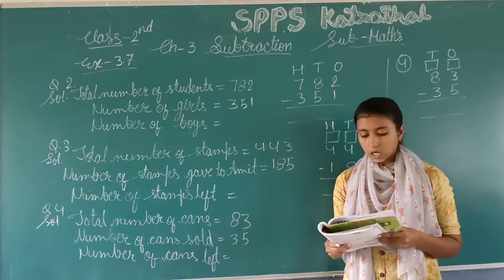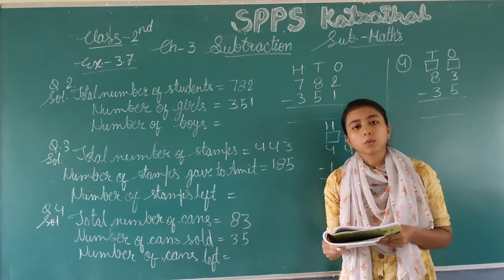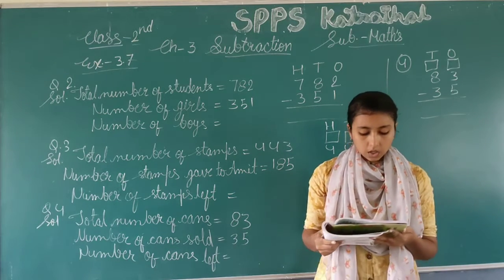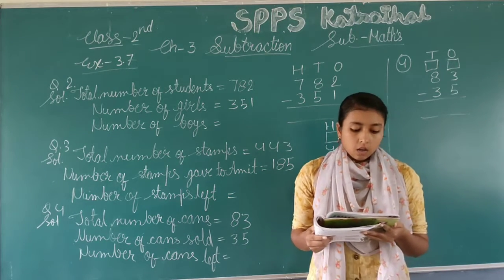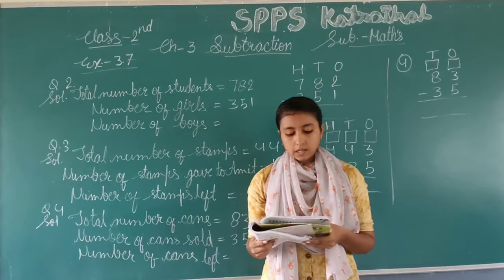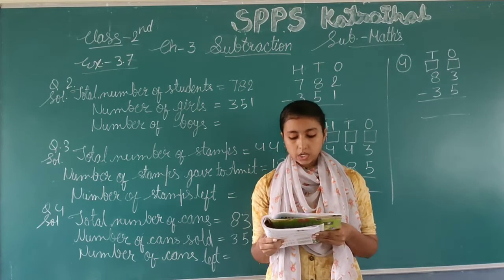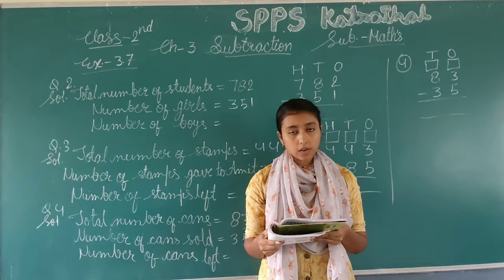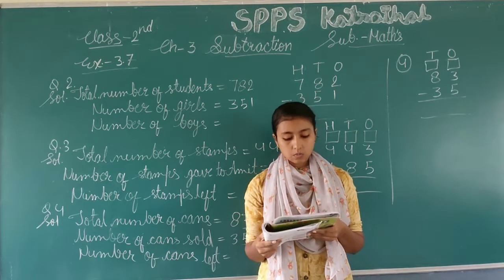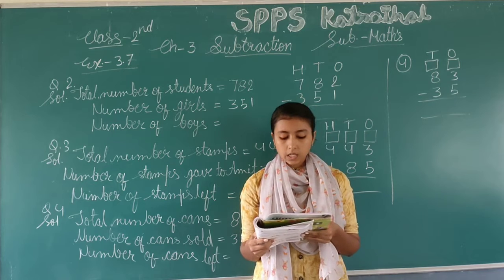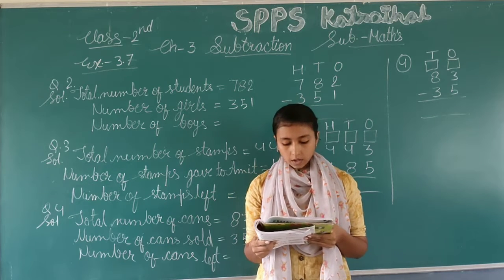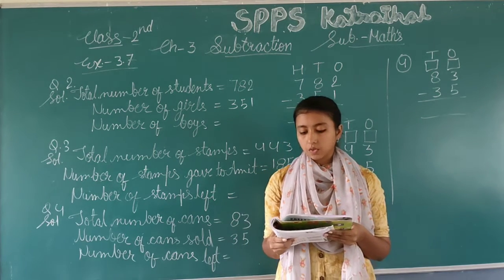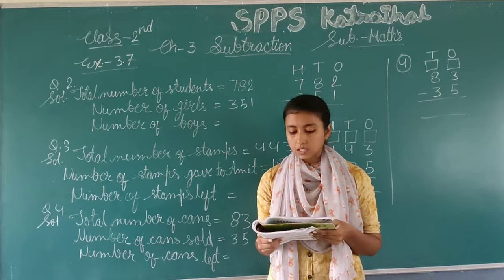Now the second question: I will open your book. The second question is — a school had 782 students, out of which 351 were girls.